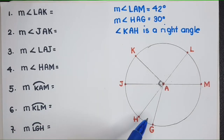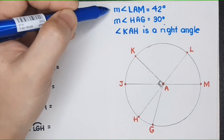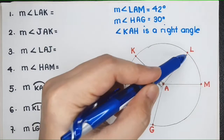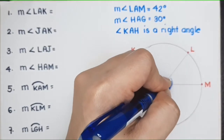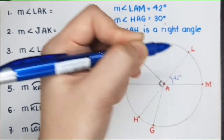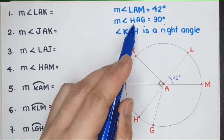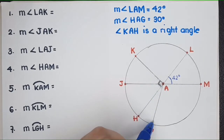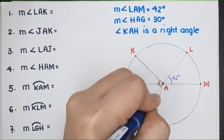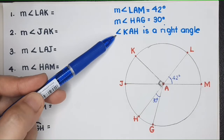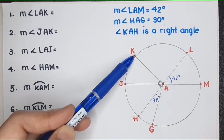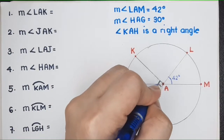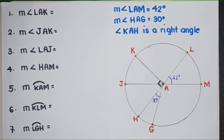So, this is the figure, and we have given measures here. The measure of angle LAM is 42 degrees. The measure of angle HAG is equal to 30 degrees. Lastly, angle KAH is a right angle — K-A-H — that measures 90 degrees, signified by the square at the corner.